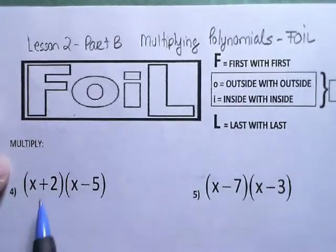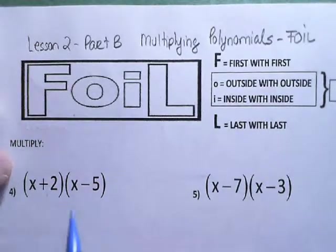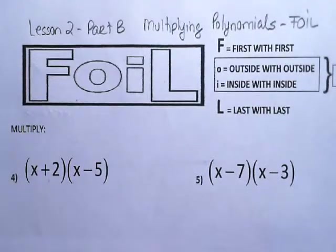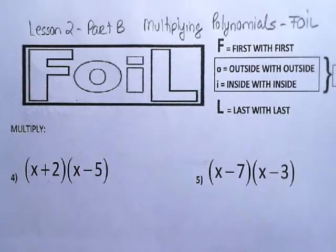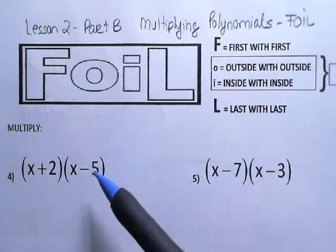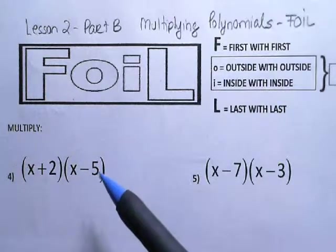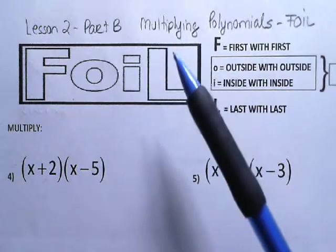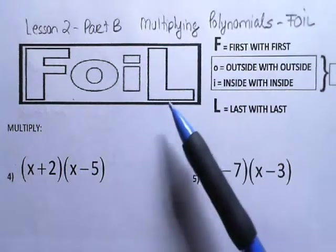We only use it when we do a binomial times a binomial. If you remember the previous lesson, we did monomial times a monomial, monomial times a binomial. Now we're going to do a binomial — something that has two terms — multiplied by another polynomial that has two terms. And to do that, we're going to use something called FOIL.